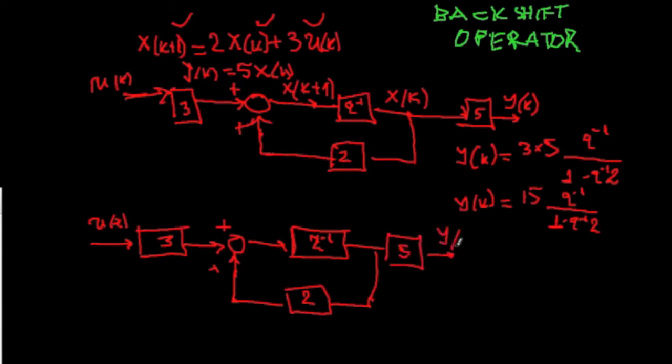So, I'm planning y(z) here. So, again, just the simple algebra leads that y(z) is going to be 3 multiplied by 5. So, we have y(z), z^(-1), z^(-1), 1 minus 2, z^(-1), 15.